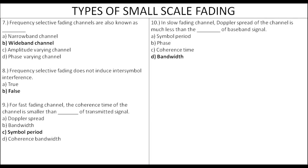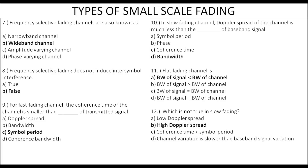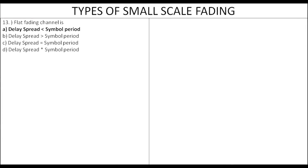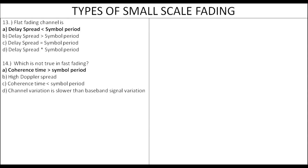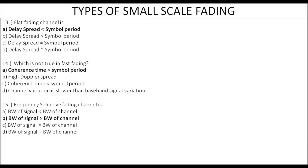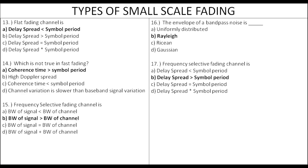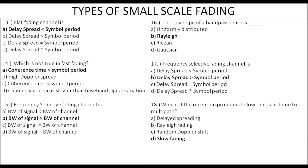For frequency selective fading, the bandwidth of the signal is greater than the bandwidth of the channel. In slow fading, Doppler spread is much less than the bandwidth of the base signal, coherence time is greater than the symbol period, and channel variation is slower than the baseband signal variation. High Doppler spread corresponds to fast fading.